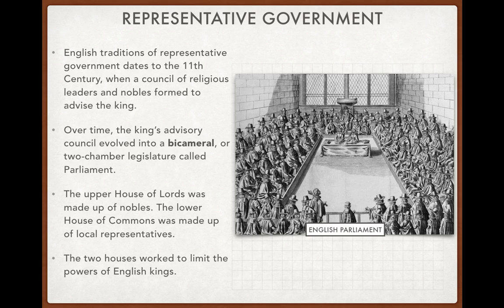In England, the upper house, or the more powerful house, became known as the House of Lords, made up of noblemen — the wealthy. The lower house, which today is actually the most powerful but back then was the least powerful, was called the House of Commons, made up of local representatives that a limited number of people could vote on. The two houses worked together to advise the king but also to limit the power of the king. That bicameral parliament limited the power of the king.